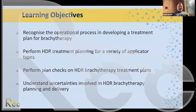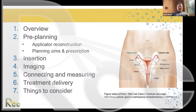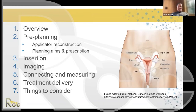Here's an overview of the presentation. We're going to start with a brief overview of what a cylinder is and why we would use one to treat endometrial cancer. We'll look at pre-planning questions including applicator reconstruction and planning aims, then discuss insertion key points, imaging considerations, connecting and measuring treatment delivery, and important things to consider when performing the procedure.